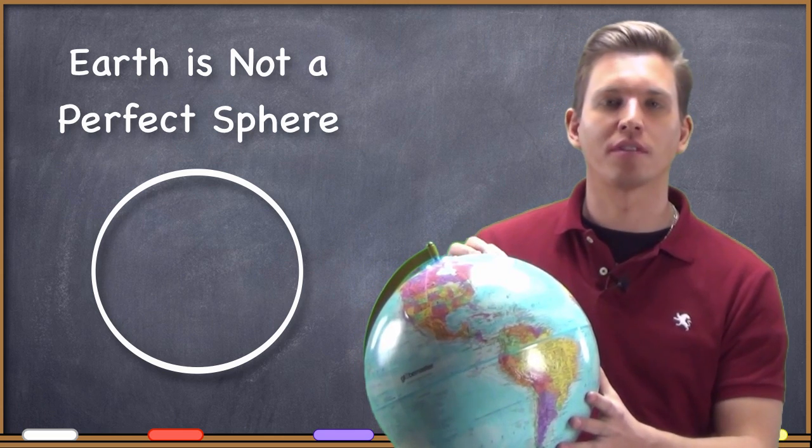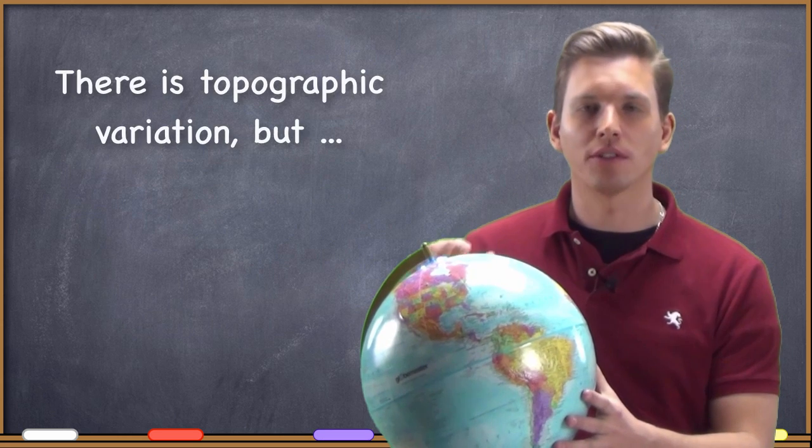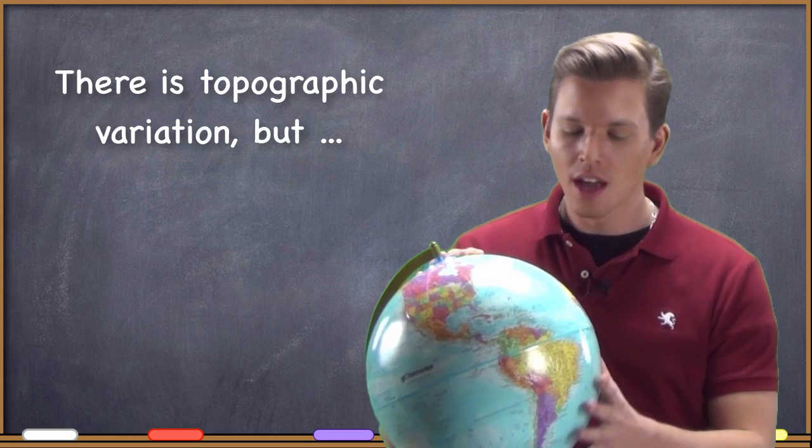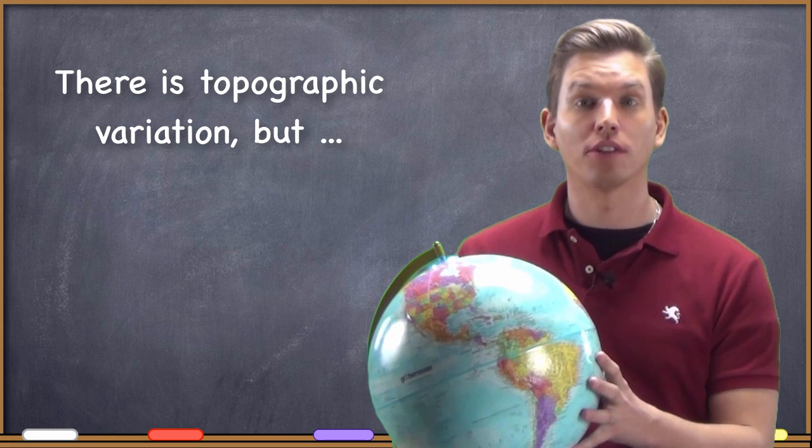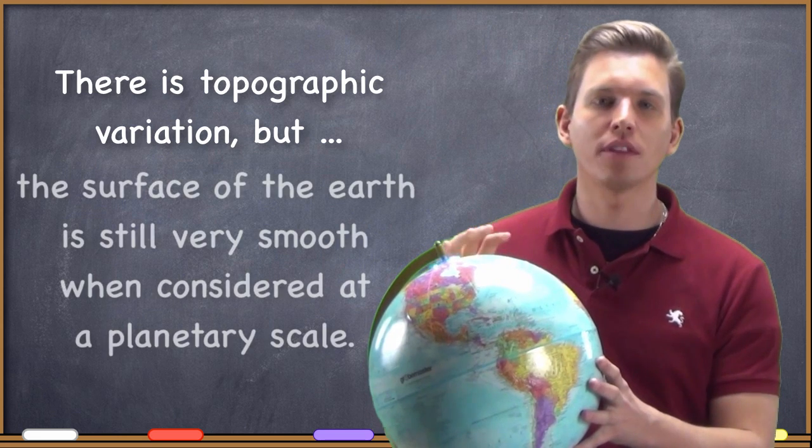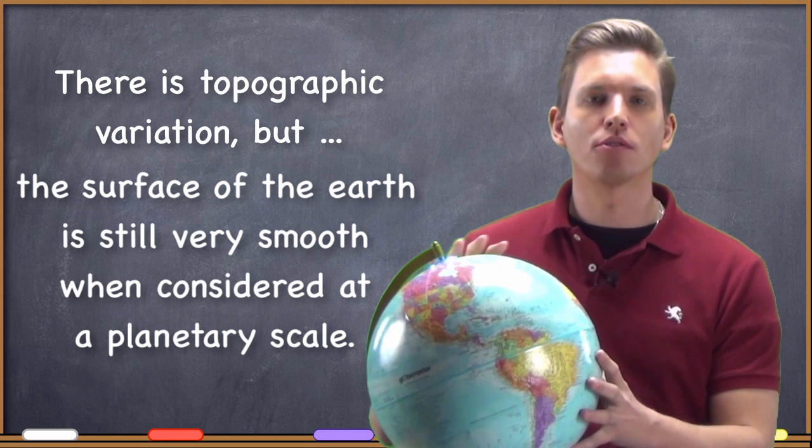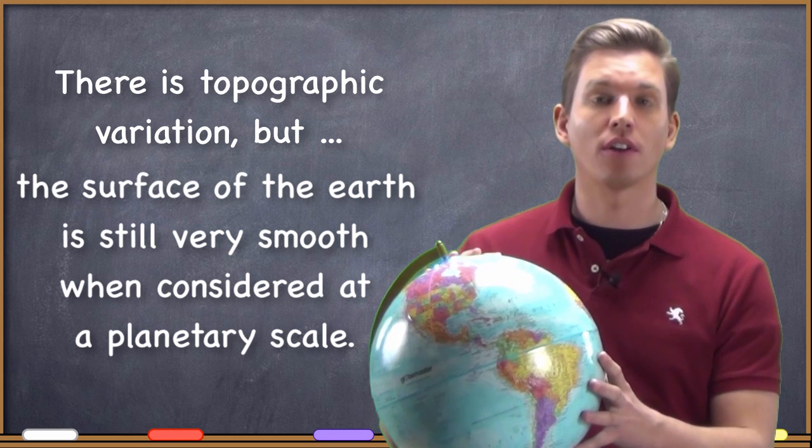There is, of course, topographic variation. We do have mountains and valleys and hills, but when you're talking about in comparison to the rest of the diameter of the Earth, even the tallest mountains don't really give us a whole lot of variation.